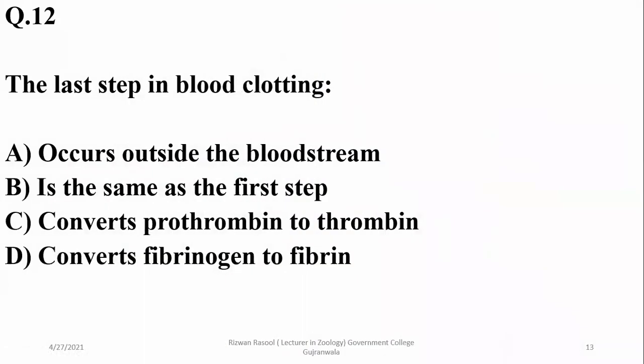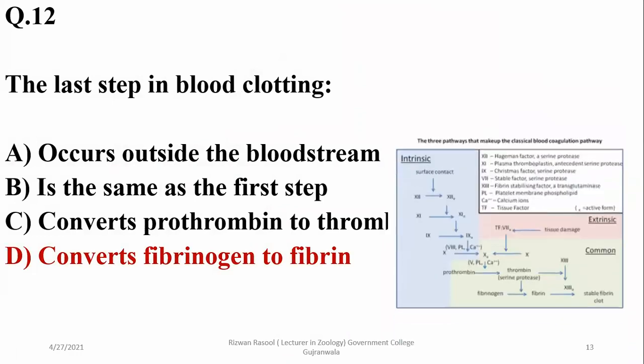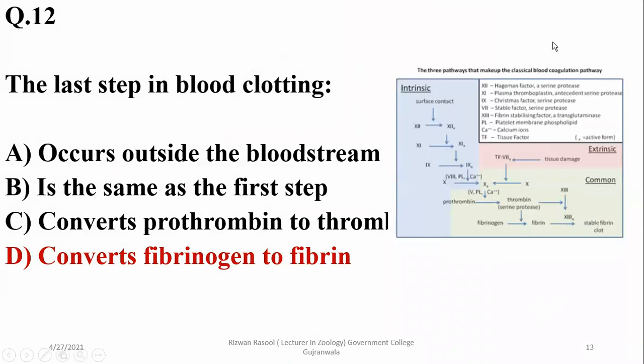The last step in blood clotting: observing the blood clotting process, there are various events, but the last event is the conversion of fibrinogen to fibrin to make clots. As you can see, stable fibrin formation is the last step in all these pathways.